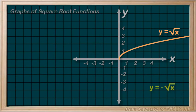If we put a negative out front, the graph reflects vertically, just like our polynomial functions.